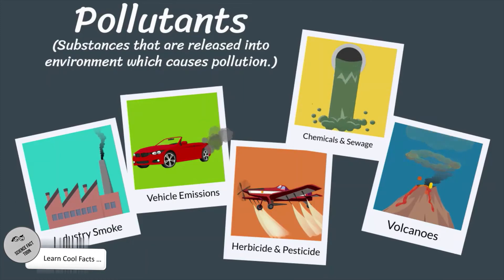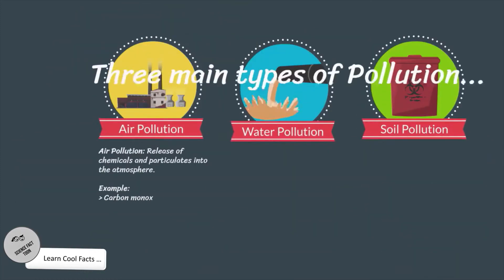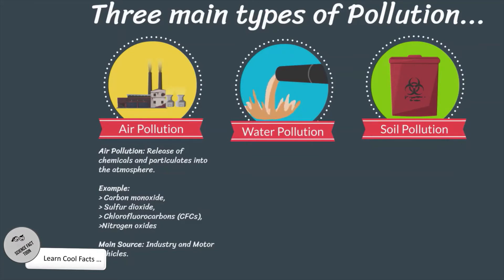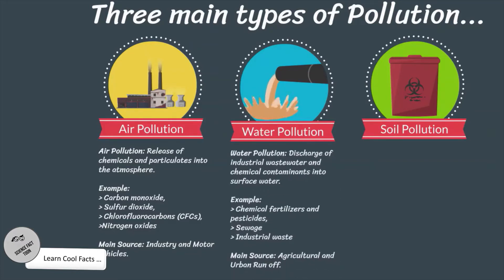There are three main types of pollution. Air pollution is the release of chemicals and particulates into the atmosphere. Examples include carbon monoxide, sulfur dioxide, chlorofluorocarbons, and nitrogen oxides. The main sources are industry and motor vehicles.